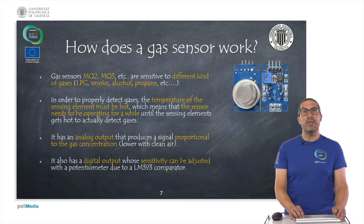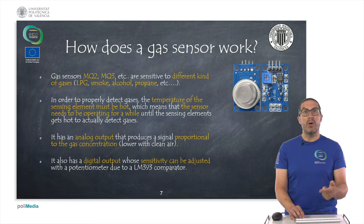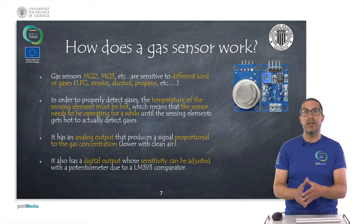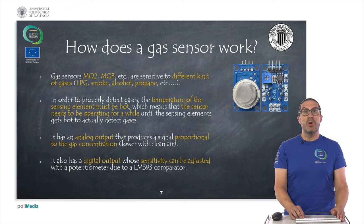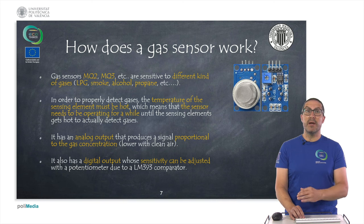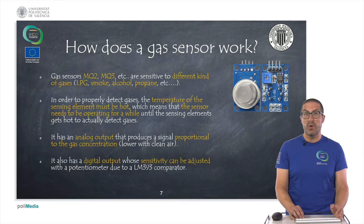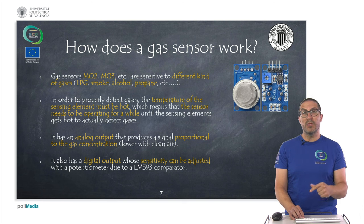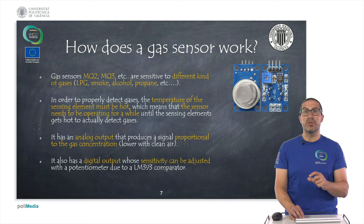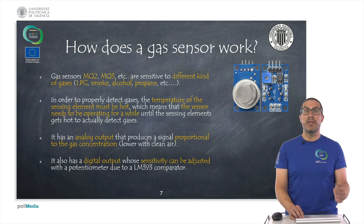In particular we use the MQ2 sensor, but there are other sensors and each is sensitive to different kinds of gases — LPG, smoke, alcohol, propane, and so on. Depending on the application we can choose one sensor or another, but the working principle is basically the same. To use these sensors, the sensing element must be hot, so we need to wait for a time to get stable measurements until the tin is hot enough. It has two outputs: one analog output, which is proportional to the gas concentration, and one digital output using a comparator, where a potentiometer allows us to adjust the sensitivity of the sensor.